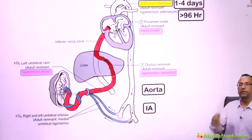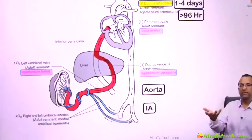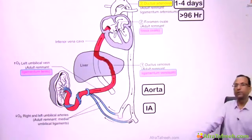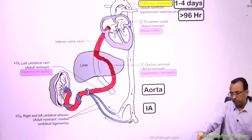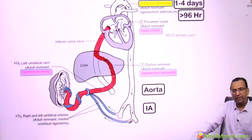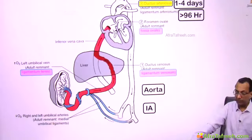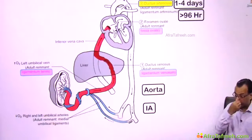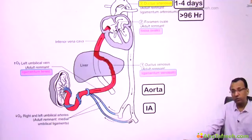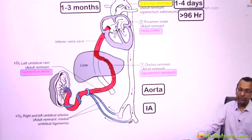The medical intervention involves giving prostaglandin derivatives. You must wait until four days (96 hours), and if physiological closure has not occurred, then proceed with medical treatment.